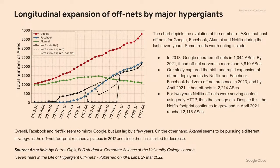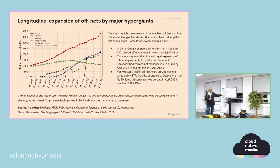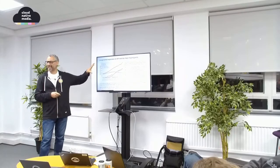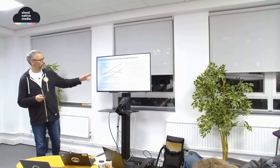In April 2021, Netflix had off-nets in roughly 2,200 AS's. Overall, Facebook and Netflix seem to mirror Google but lag by a few years. Akamai, on the other hand, seems to be pursuing a different strategy — their off-net footprint reached a plateau in 2017 and has since declined. To be fair, Akamai is a world-class delivery network; they appear to have reduced off-nets in very small stub AS's with limited audience coverage. This measurement only counts number of locations, not capacity.